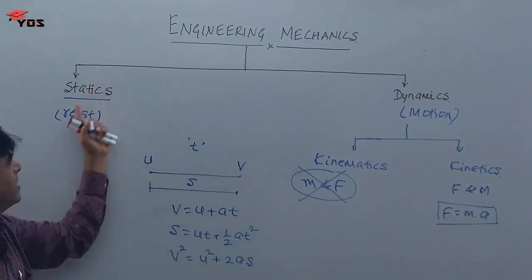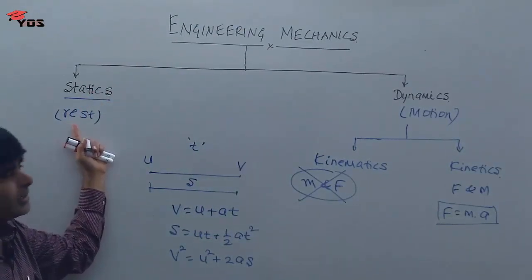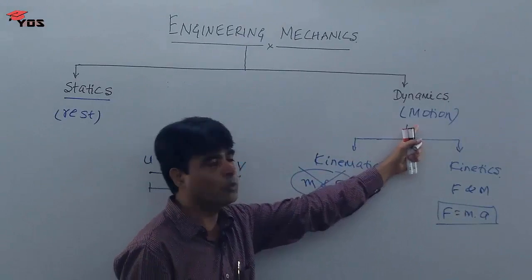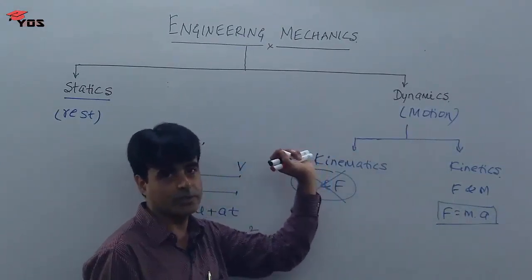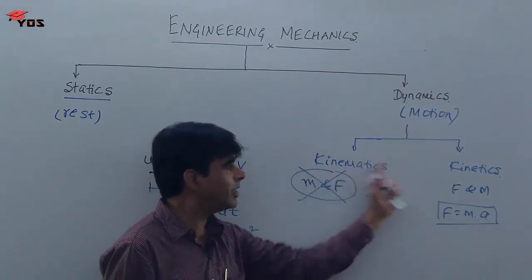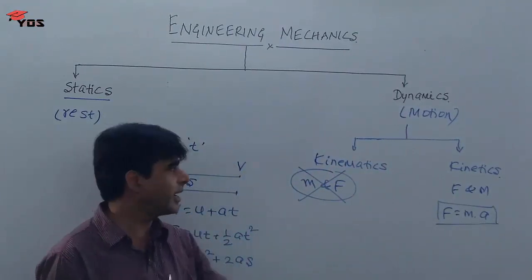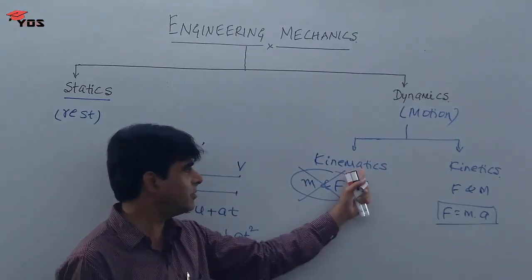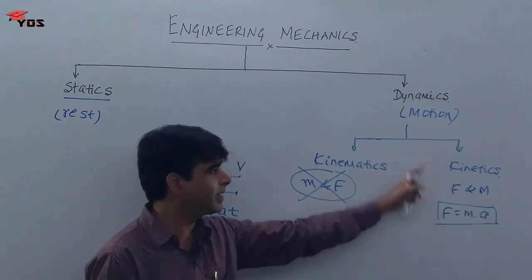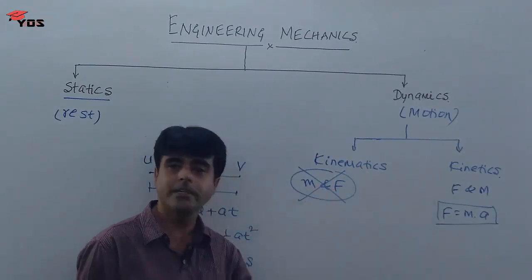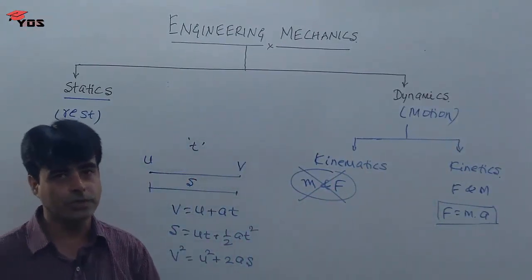In statics the body is at rest, whereas in dynamics the body or particle is in motion. Under dynamics there are two types: kinematics, where we do not consider mass and force, and kinetics, where we consider force and mass causing the motion.